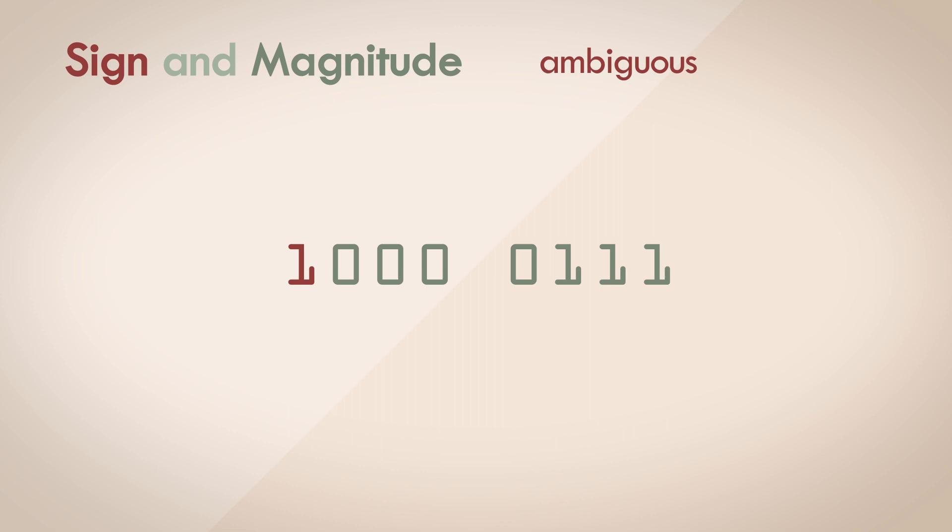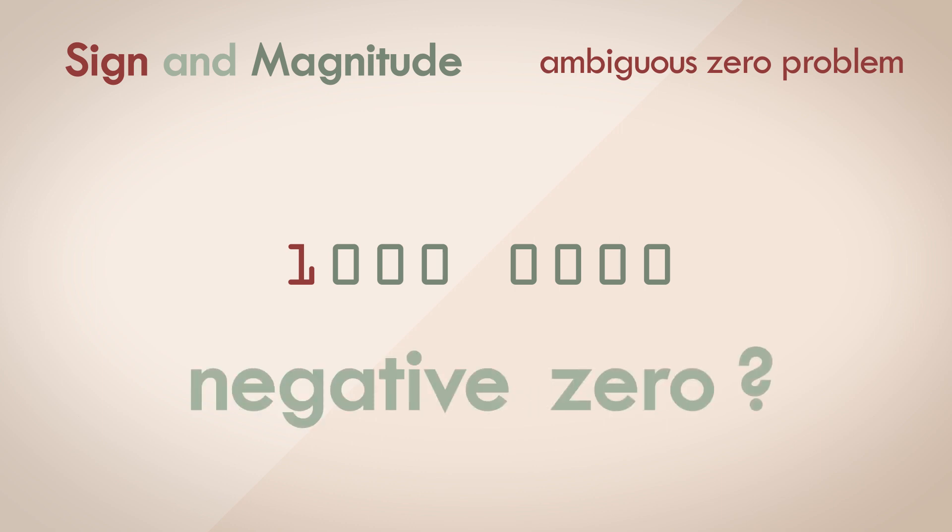One of them is the ambiguous zero problem. Consider this 8 bit number. The value represents 0 of course. Let's flip the sign bit. What is this number now? Negative 0? We know that 0 is neither positive nor negative, and now we have the problem of handling two different types of zeros. One of them being redundant and ambiguous.